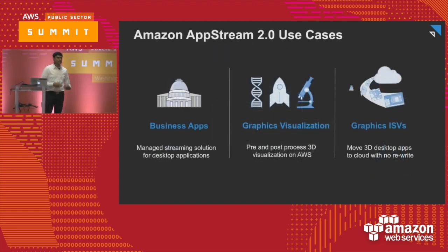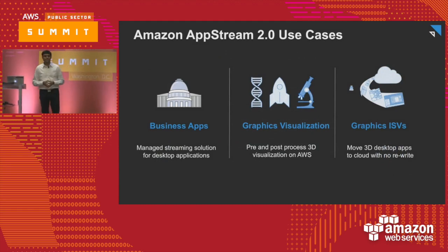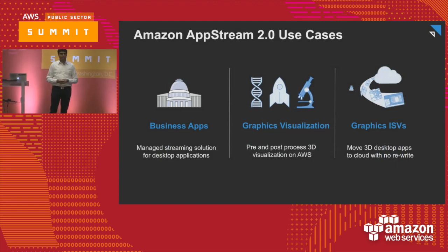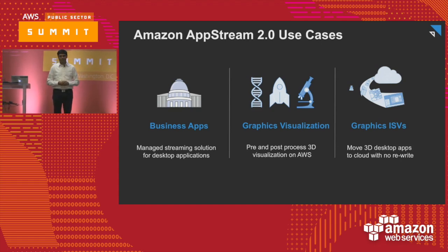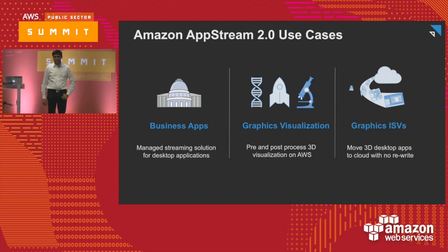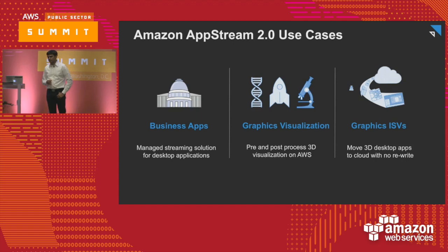In terms of use cases for AppStream 2.0, they line up in three buckets. First, there are business applications that are commonly used — whether business intelligence, data analytics applications, or productivity applications used on a regular Windows desktop. Those can be streamed, and this applies across businesses, public sector, EDU, and all different types of customers.